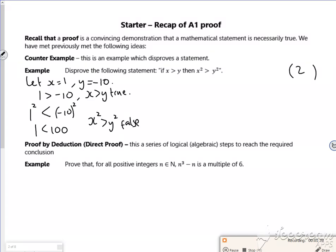So I just kind of looked at both a bit separately there. Therefore, if x is greater than y then x squared is greater than y squared is false.